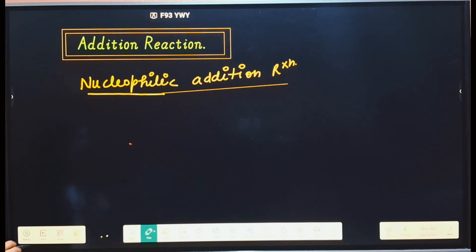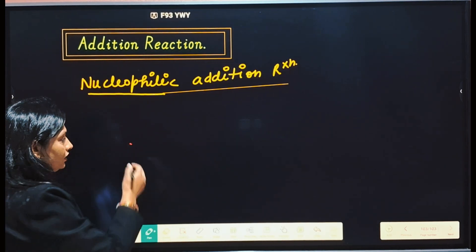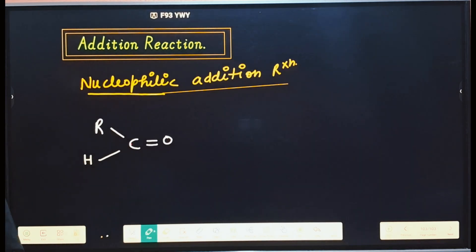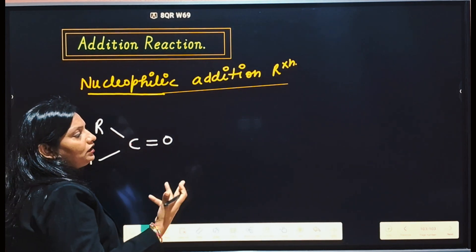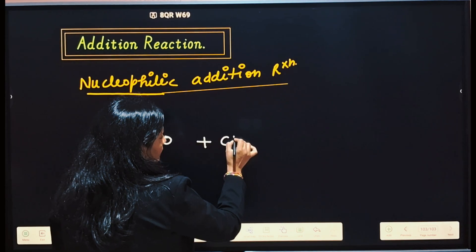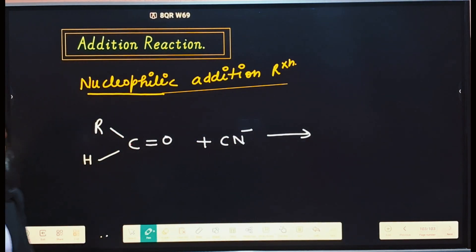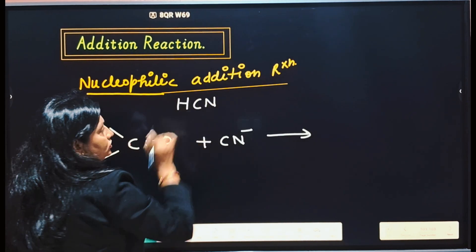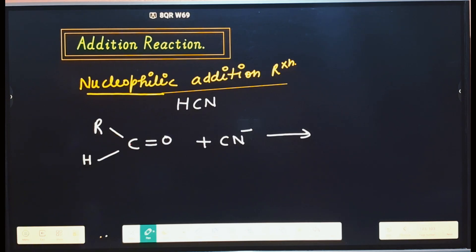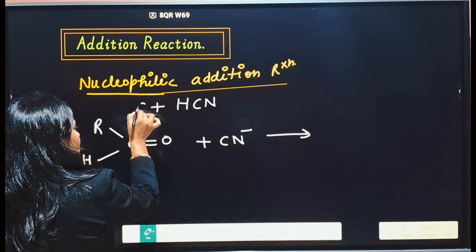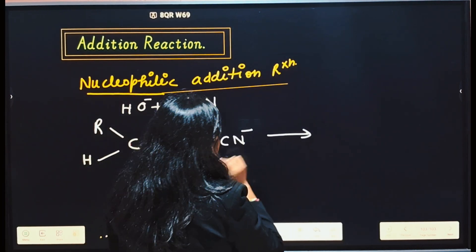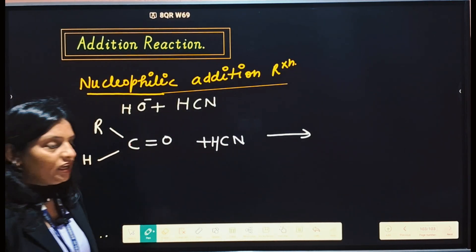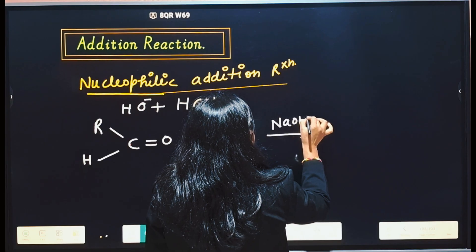For example, if we have an aldehyde or ketone, and if any nucleophile is present — like hydrogen cyanide (HCN) — then we will do this reaction in basic medium. This reaction we will do in basic medium, where we are having hydrogen cyanide.